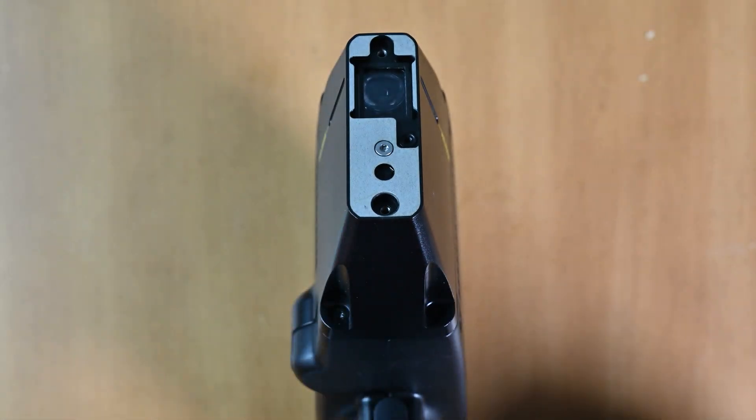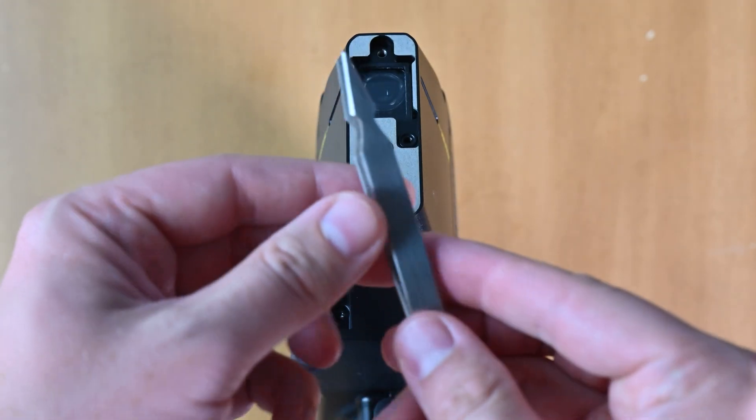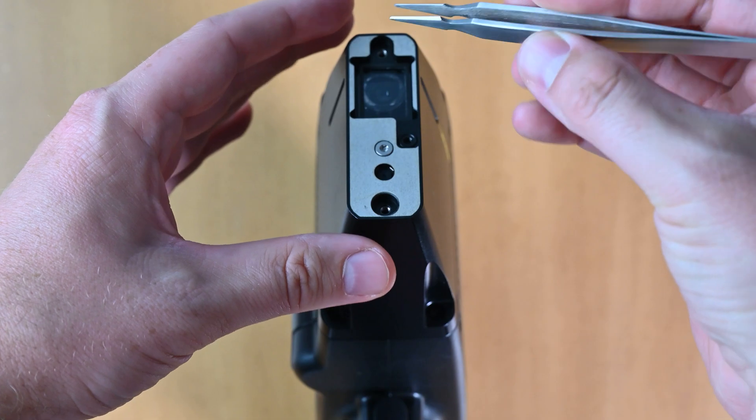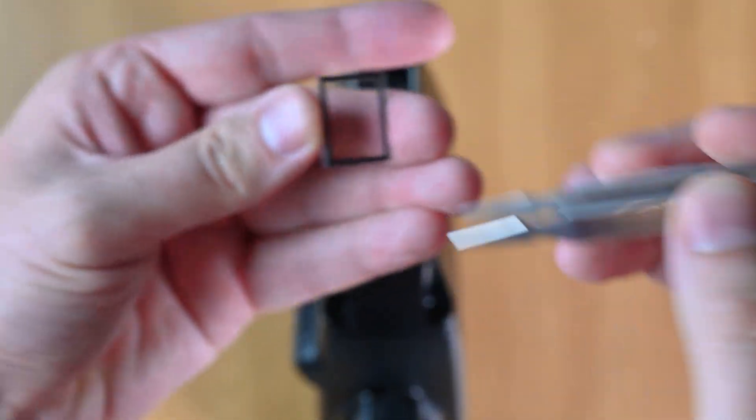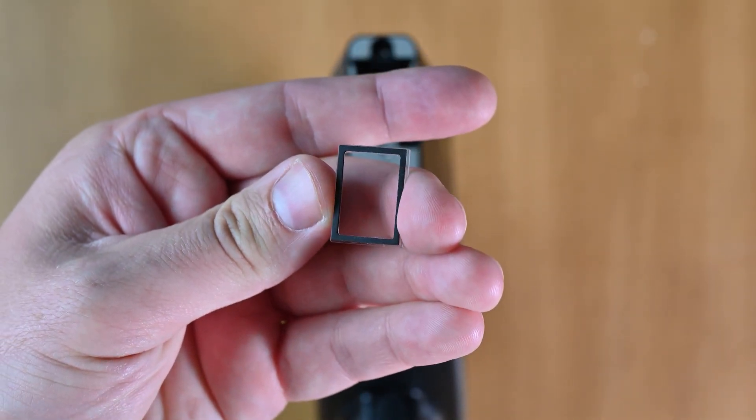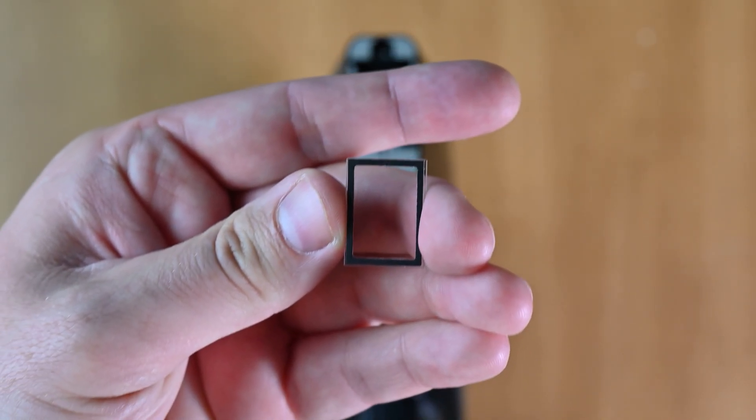So what we need to do inside of there is we need to take a tweezer like this one or a flat object and pry out this little shield here. This is called the blast shield. You should have a few spares in your kit.